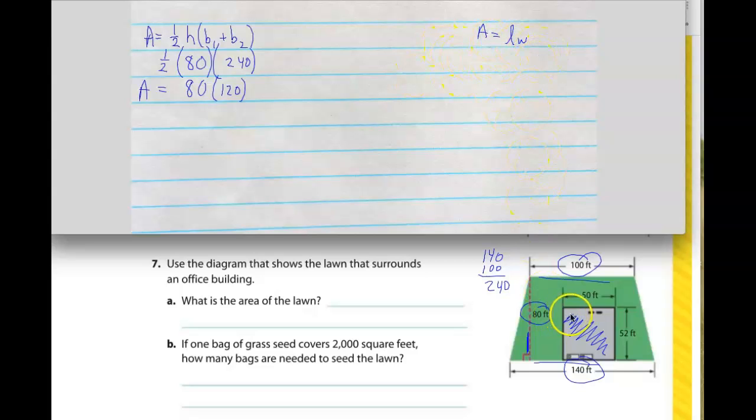So the area of a rectangle is length times width, so area is equal to 50 times 52. So you can do that bit on your own. Now, once we get this, you're going to actually take this area, which is going to be larger, and you're going to subtract whatever this area is when we actually solve that. And then you're going to end up with just the area of the grass.